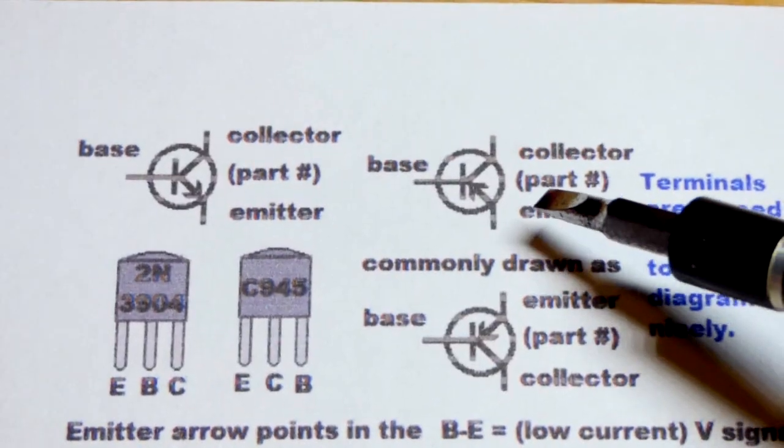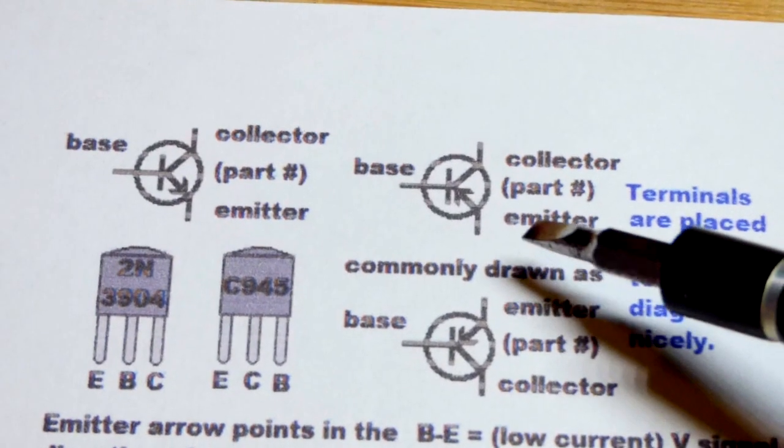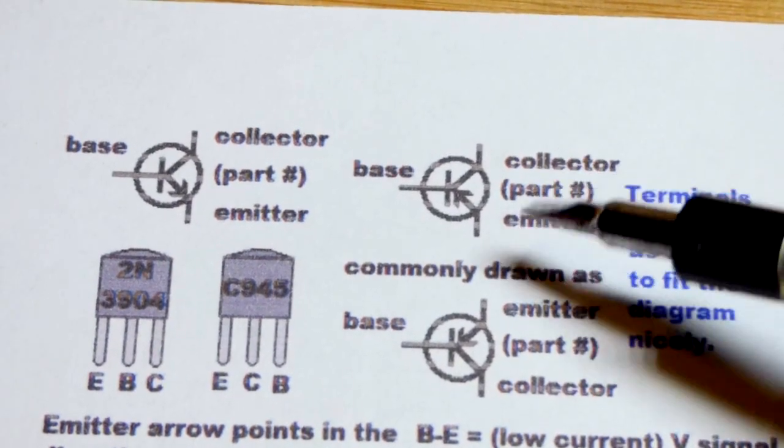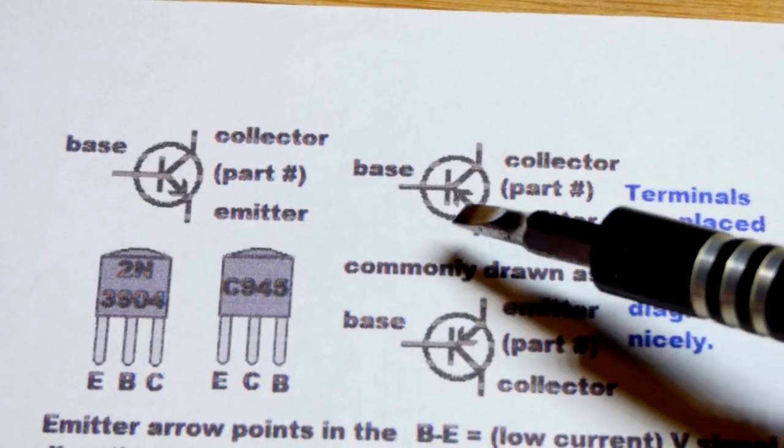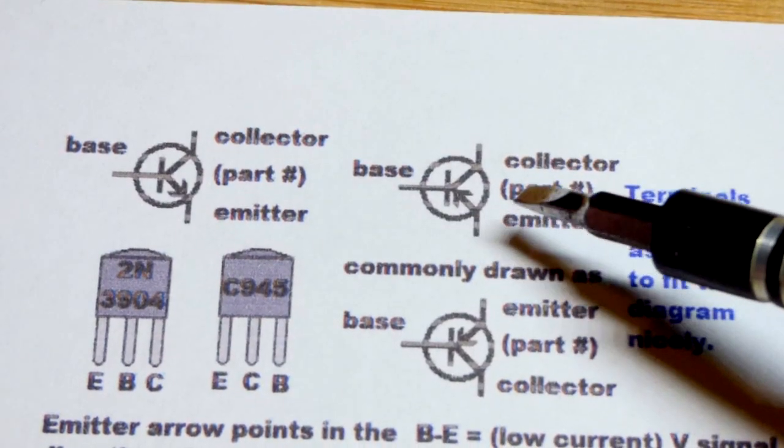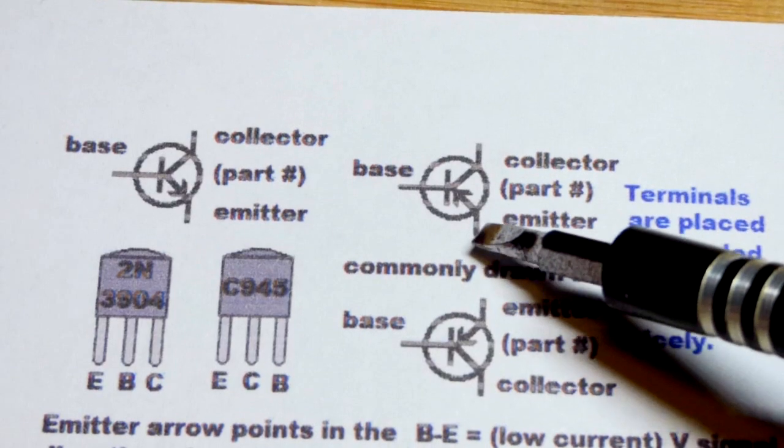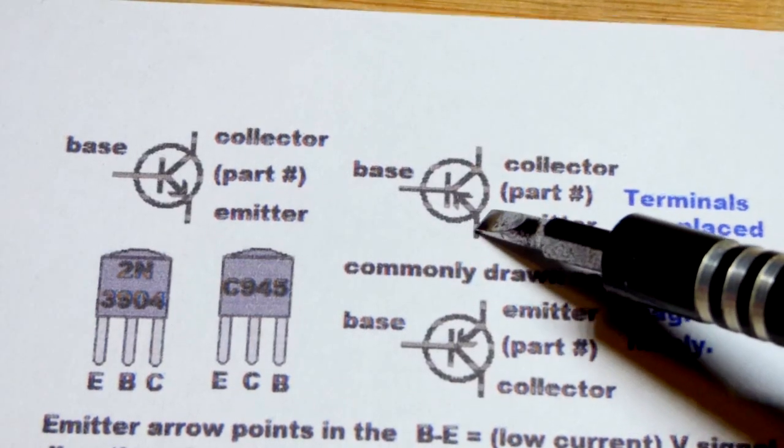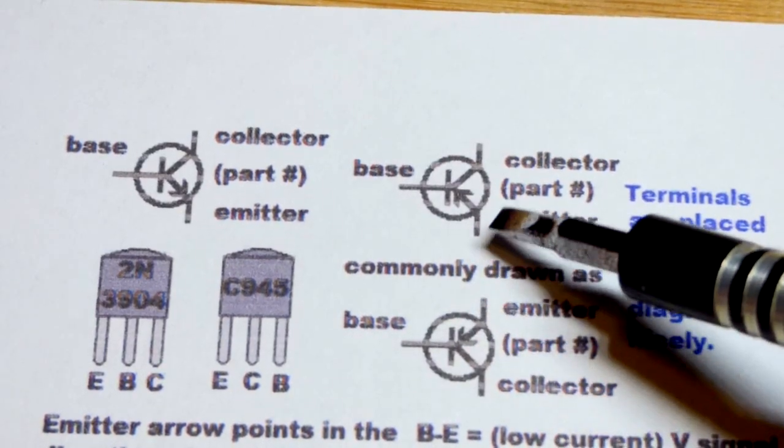There's also a PNP bipolar junction transistor. And I keep saying bipolar junction transistor instead of transistor because there's also FET transistors. So they're quite a bit different, their schematic symbols and electrical properties. We're just going to focus on the bipolar junction transistor here.